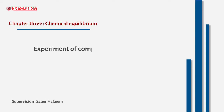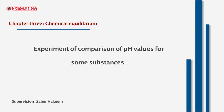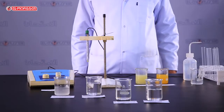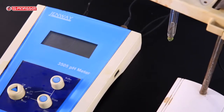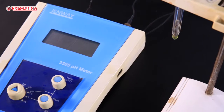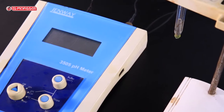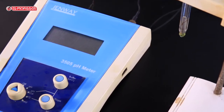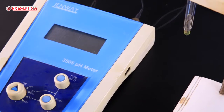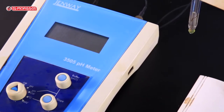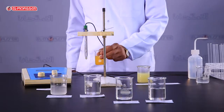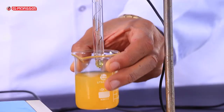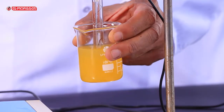In this experiment, we compare pH values for some substances using a pH meter to measure the pH value of different substances, so you can compare their acidity or basicity. The pH value of orange juice equals 5.01.